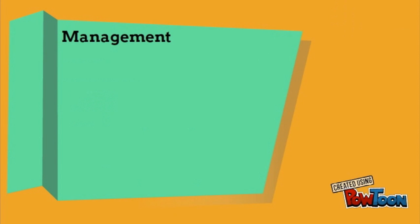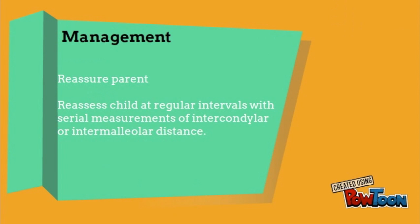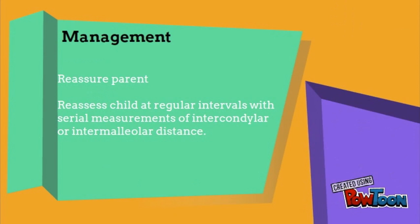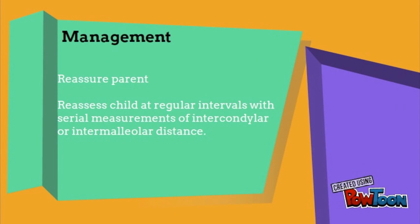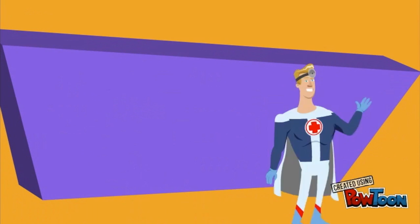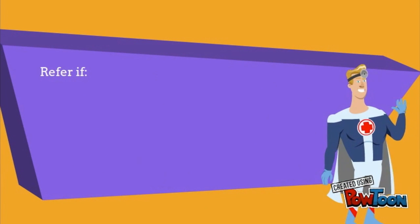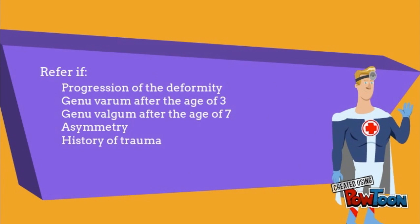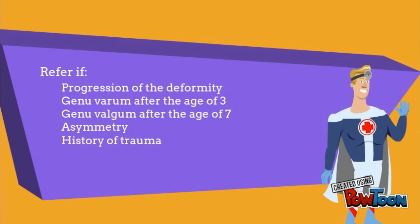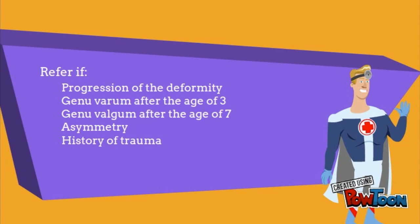Management: Reassure the parent and reassess the child at regular intervals with serial measurements of intercondylar or intermalleolar distance. Refer the patient if there are features of pathology such as progression of the deformity, genu varum after the age of 3, genu valgum after the age of 7, asymmetry, or history of trauma.